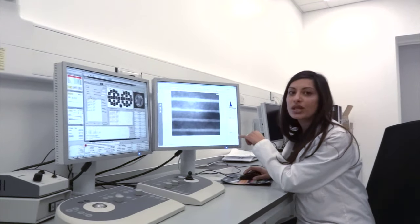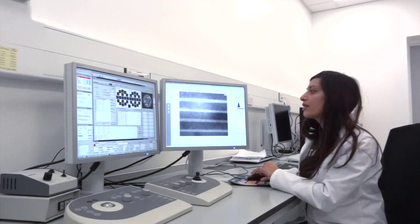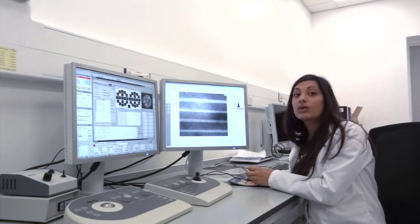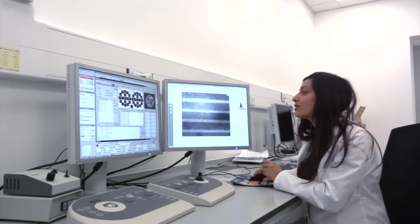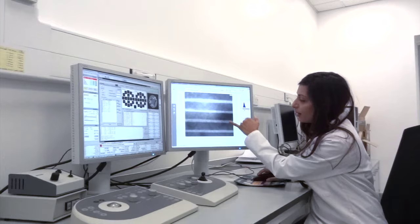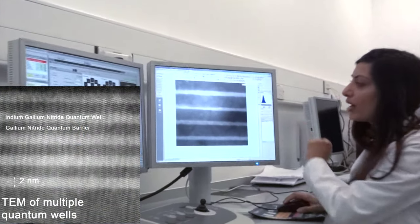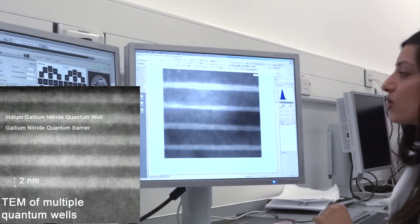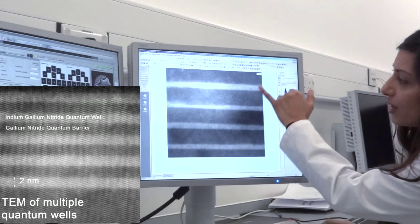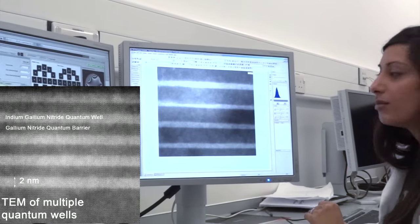This imaging technique is called atomic number contrast. This is where heavier atoms appear with much brighter contrast than lighter atoms. In this case we can see the indium gallium nitride quantum wells with very bright white contrast in comparison to the gallium nitride barriers in between.